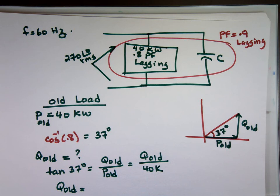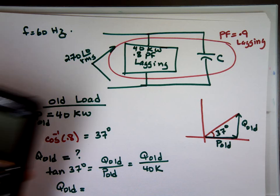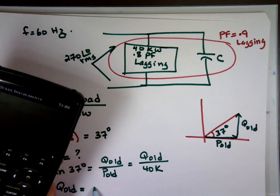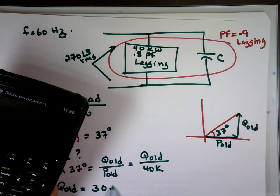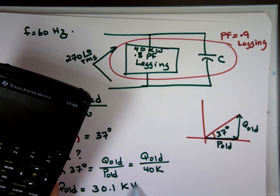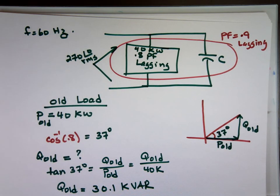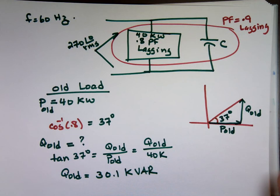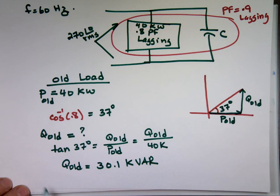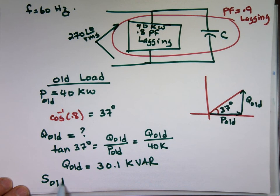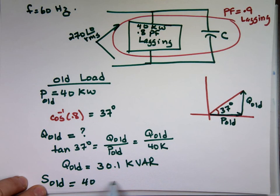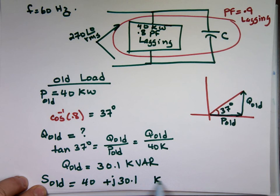So what's Q old times 40K, right? Tangent of 37 degrees times 40,000. And it's 30,000, 30.1, 30.1 kilovar. So S old, the old load, is going to be the real value, which is 40 kilo, 40 plus J, 30.1 K.